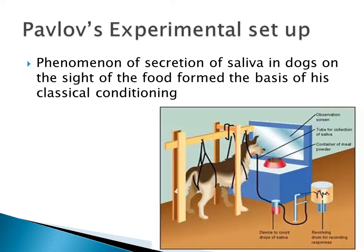During his experimental work on dogs, he noticed a phenomenon of secretion of saliva in dogs on the sight of the food or sound of the caretaker's approaching footsteps. This psychic secretion — the phenomenon of secretion of saliva in dogs on the sight of the food — formed the basis of classical conditioning.